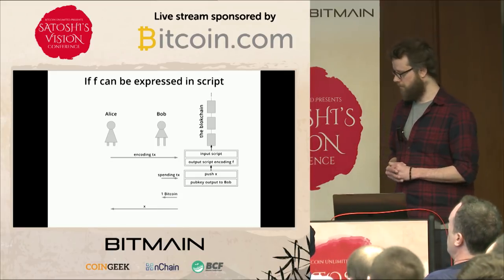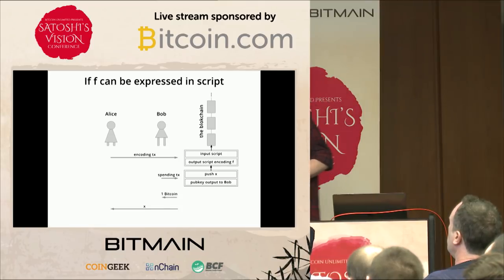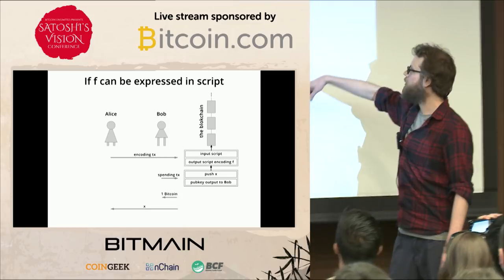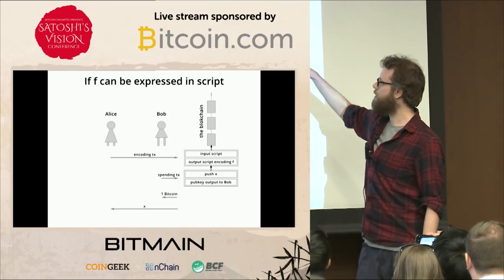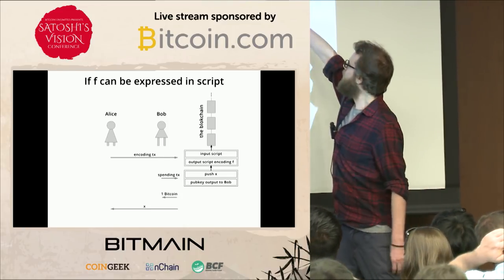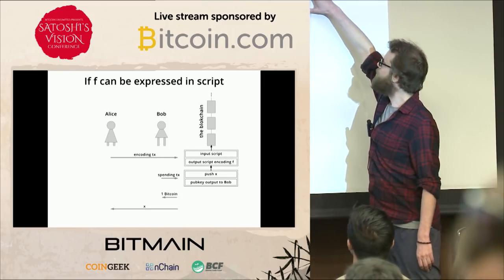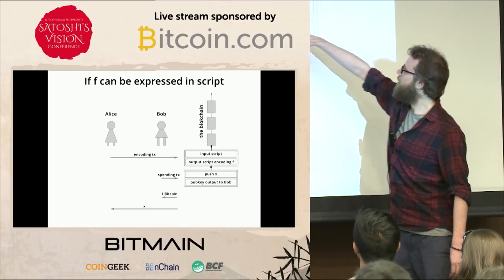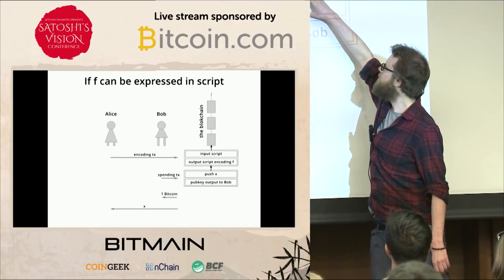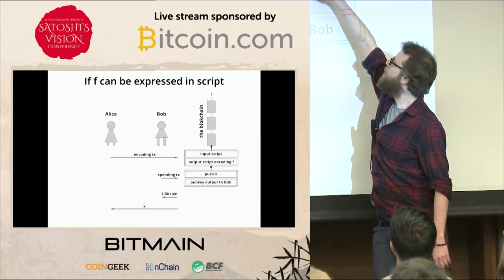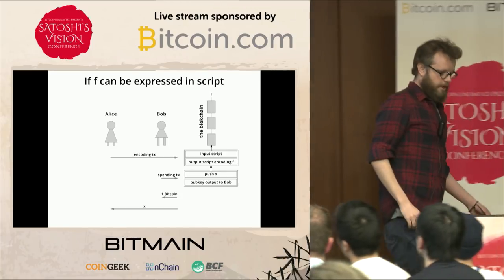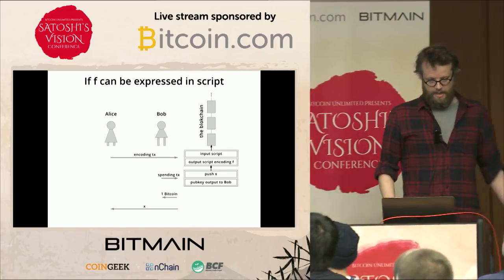Alice has broadcast a transaction encoding f that spends one bitcoin. Bob knows that secret x, and since he wants the bitcoin, he broadcasts a second transaction where the input script encodes the secret value x. That gets plugged into the output script created by Alice, evaluating it to true, and Bob spends that bitcoin. Bob gets the bitcoin, and Alice learns x by looking it up on the blockchain — that's trustless exchange when f is a simple function.